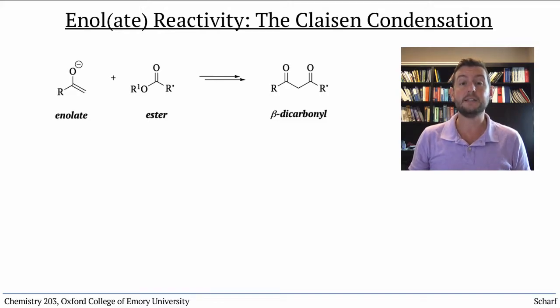The final reaction of enolates that we'll learn is the reaction of an enolate nucleophile with an ester electrophile to produce a beta-dicarbonyl compound.